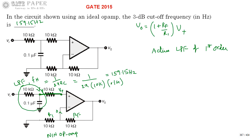So here operational amplifier along with RF and R1 is acting as non-inverting op-amp, which provides a gain of 1 plus RF by R1. The value of 1 plus RF by R1 according to this circuit is 2.